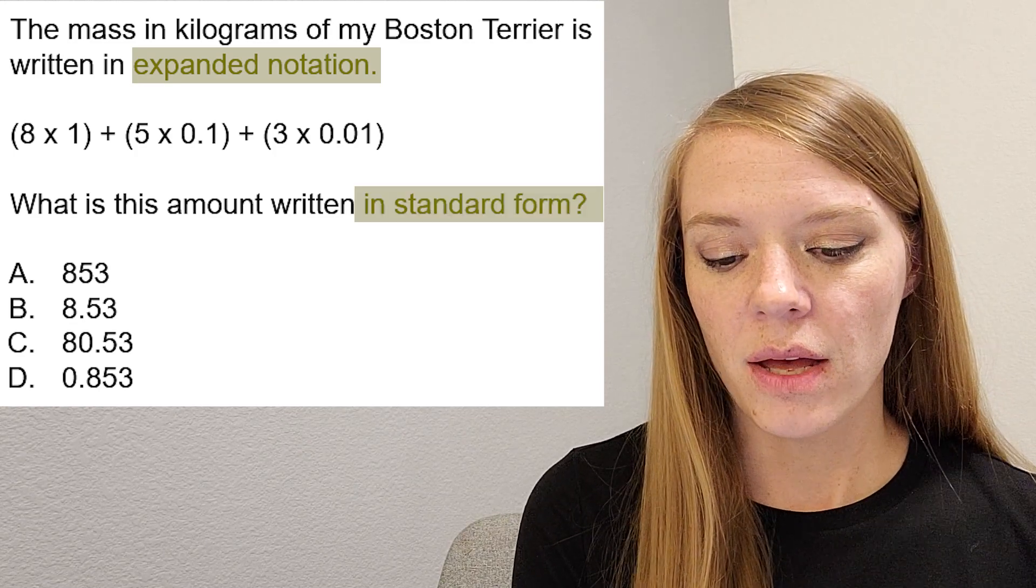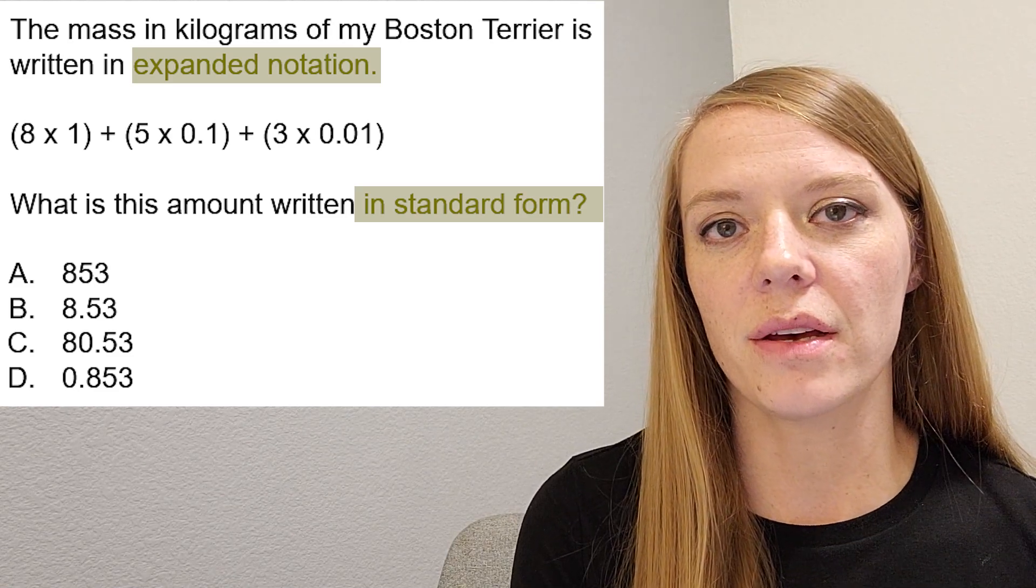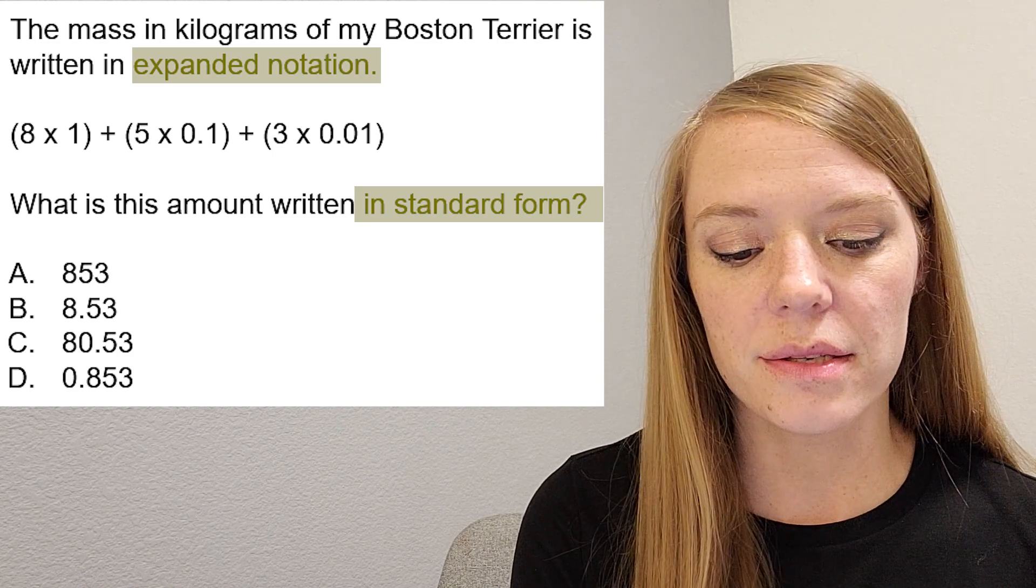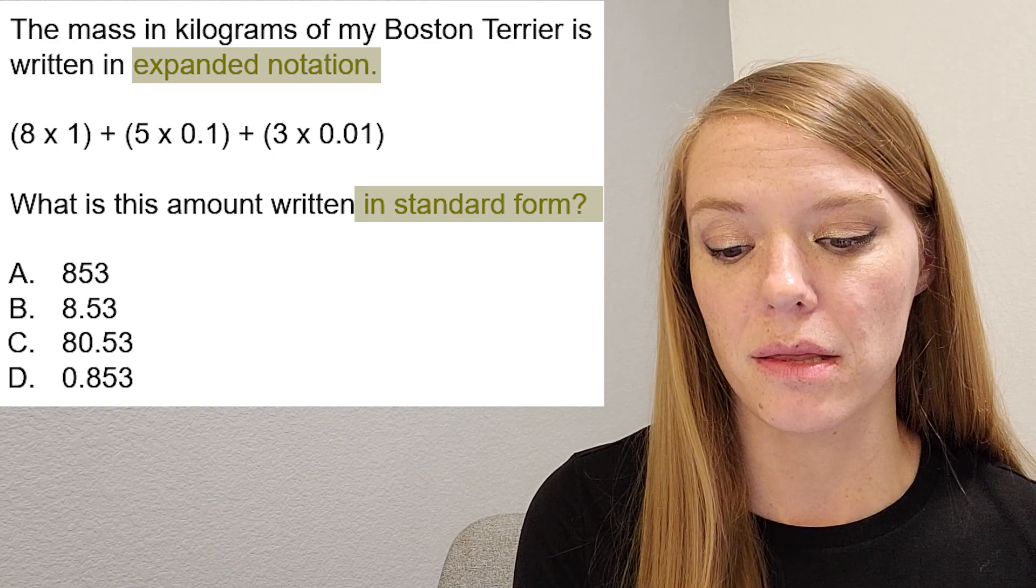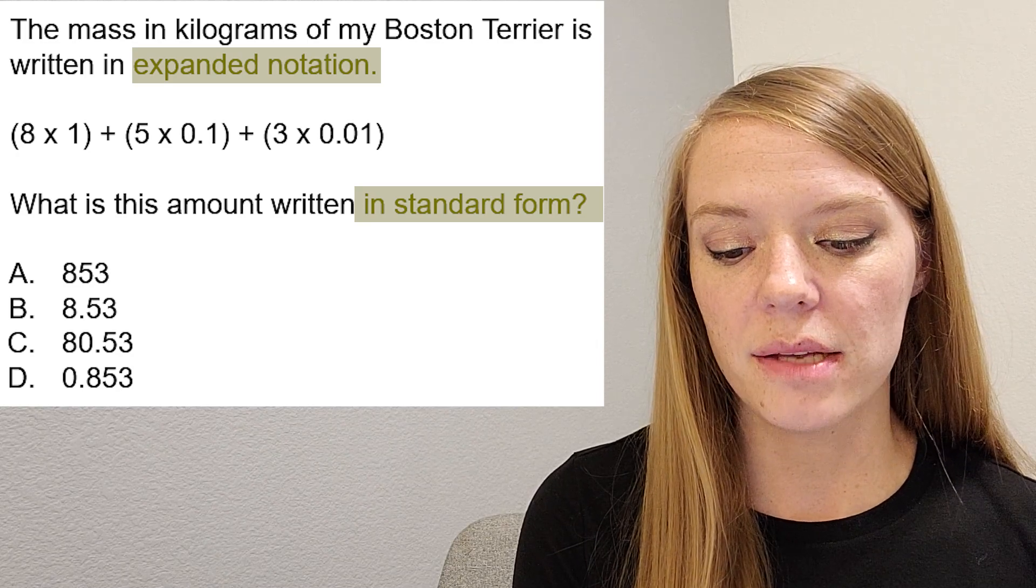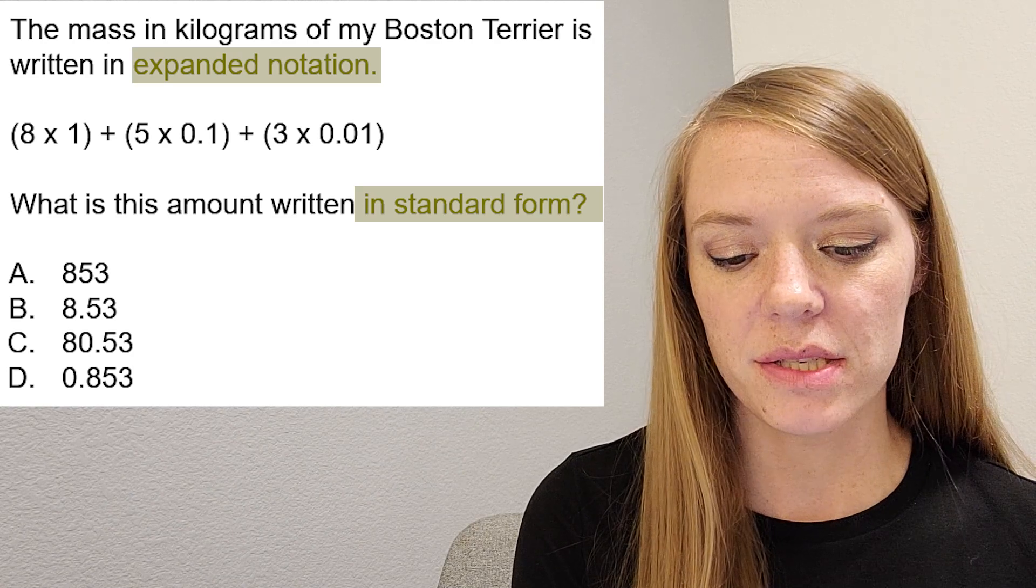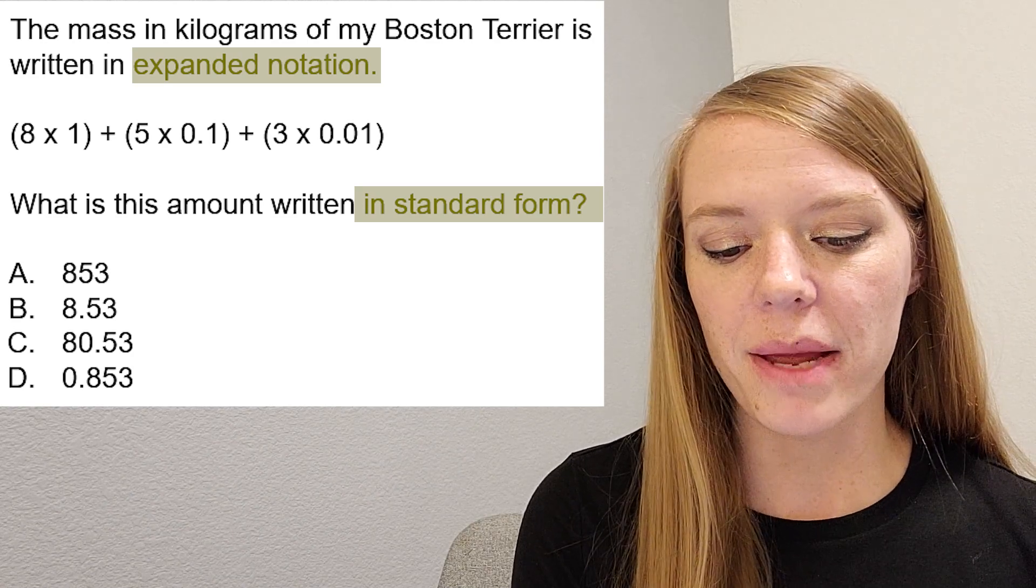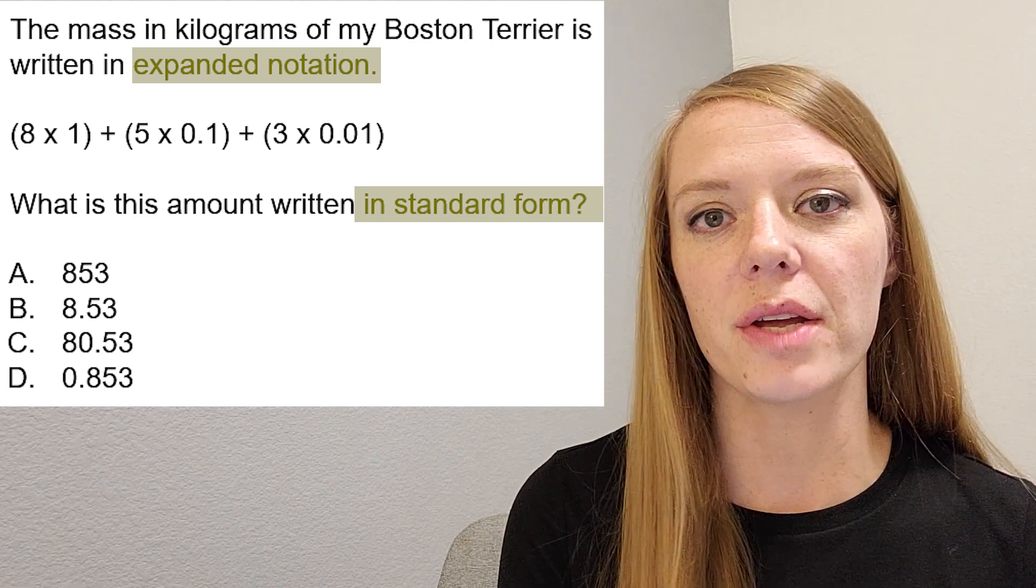Okay, now I think this would be a good time to just make sure that we understand a lot of the vocabulary and see if everything's kind of making sense before we do any math. So it's saying the mass in kilograms of my Boston Terrier. And that might be a tricky set of words for you. If you don't know what a Boston Terrier is, it's a type of dog.